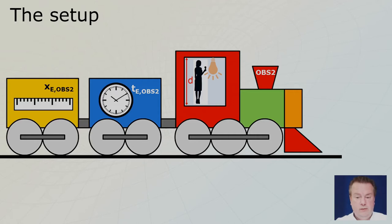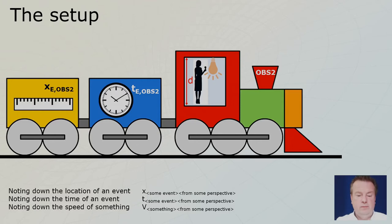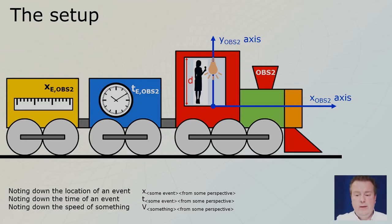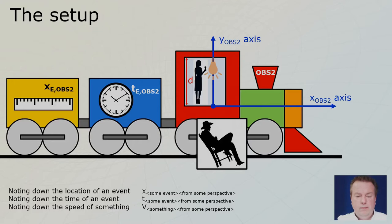When she knows how long it took and she knows the distance was D, she can calculate the speed of light. Here we have my famous notation: we write down the x-location of some event from some perspective, the t of some event from some perspective, and the velocity of something from some perspective. Observer two has its own x-axis, and now we will introduce the y-axis as well. Einstein's special relativity normally deals with one dimension — x — and we ignore y, because there's not much going on in the y and z directions. But now we need the y-axis.